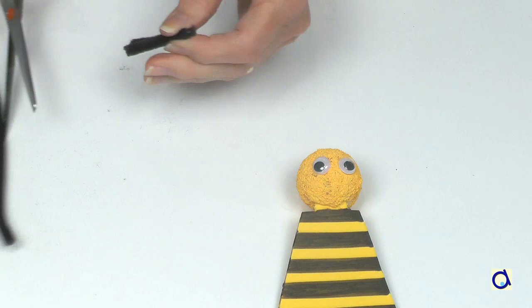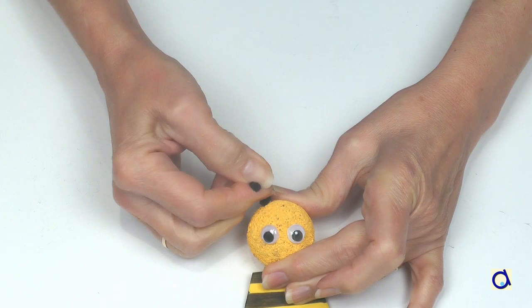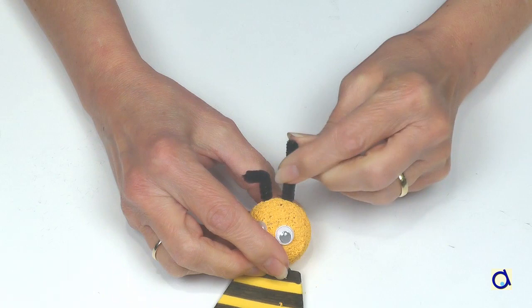Glue two googly eyes on the head. Take a black pipe cleaner and cut two pieces of about 2 inches long and stick them on top of the head. They form the antennae of the bee.